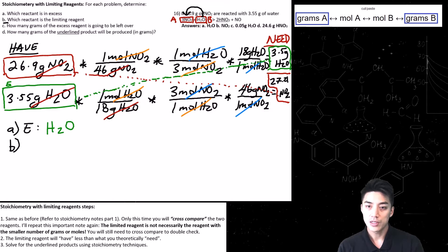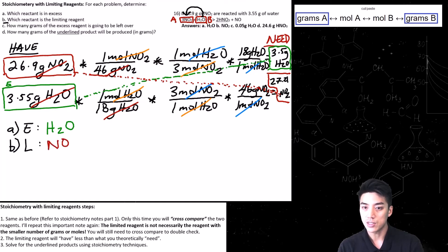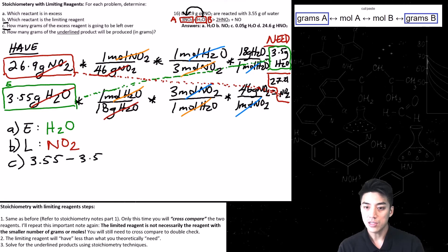Letter B asks which reactant is the limiting reagent. Looking at the numbers in the red boxes: 26.9 grams — what I have for NO2 — is a little bit less than what's needed, which is 27.21 grams. So because that number is less, NO2 is the limiting reagent. Letter C asks how many grams of the excess reagent will be left over. We just do some subtraction: 3.55 minus 3.5 gives us 0.05 grams of extra H2O.